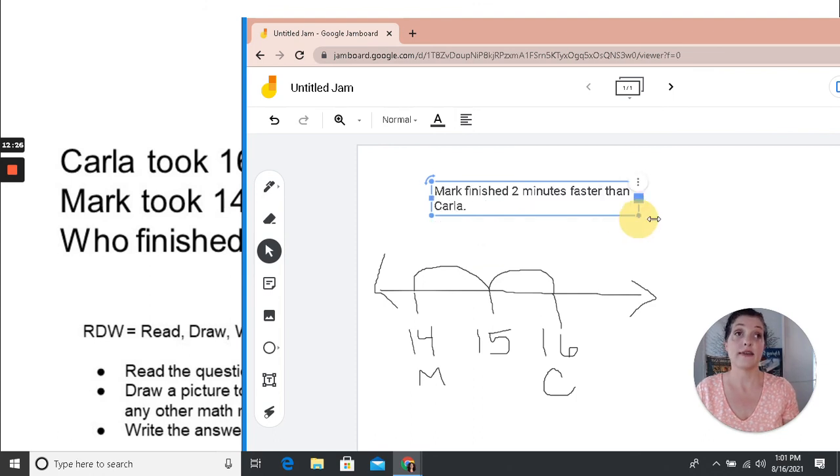Okay, so I have answered the question correctly. But I want to do even better. I want this to be the best answer it can be. I'm going to now explain how I know that Mark finished two minutes faster. So I'll say, I know this because 14 is two minutes less than 16. So there I have my answer. All right, so there's how I would answer this question.